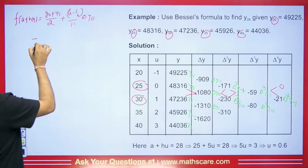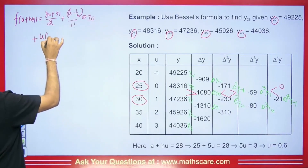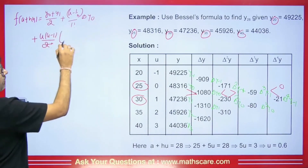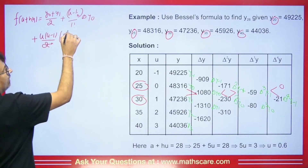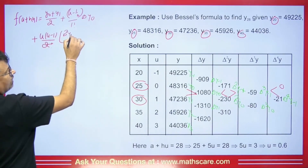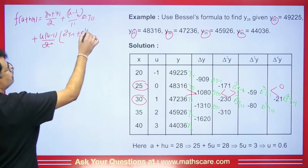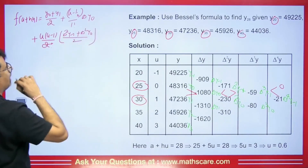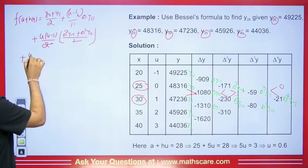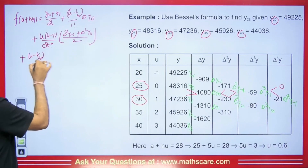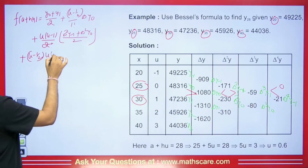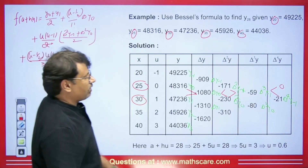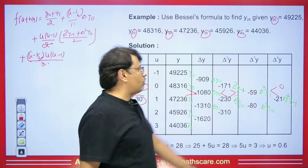Moving ahead, we will get U(U minus 1) upon 2 factorial. Then we will get the average: del squared Y minus 1 plus del squared Y0 divided by 2. And then the term (U minus 1/2) times U times (U minus 1) upon 3 factorial, multiplied by del cubed Y minus 1.